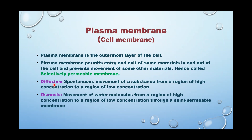The plasma membrane helps in a very important process called diffusion and osmosis. Diffusion is the spontaneous movement of a substance from a region of high concentration to a region of low concentration. The substances can be gas, water, or any solid material that wants to pass through this membrane — from the cell to the outer environment, or vice versa, or between cells.